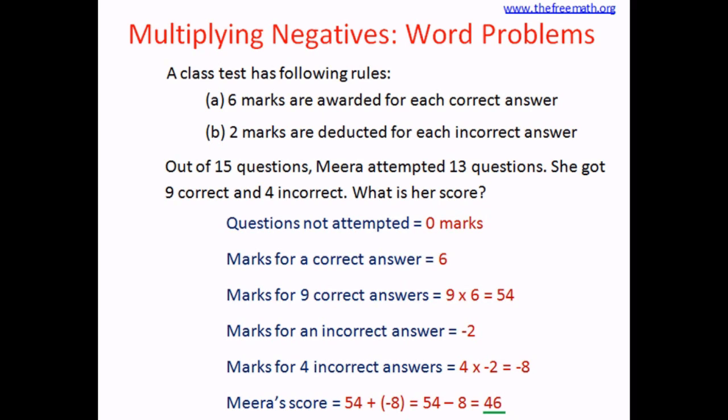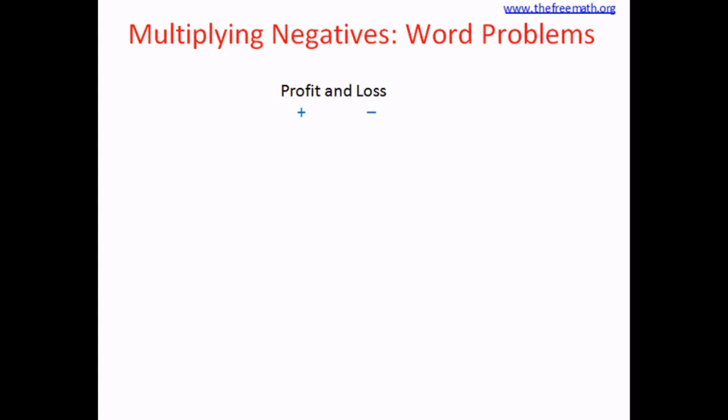Where else do we use negative numbers? In profit and loss. For example, a furniture shopkeeper gets 100 rupees of profit per table and incurs 20 rupees of loss per chair. Profit is positive and loss is negative, so profit per table is positive 100 and loss per chair is negative 20. You can solve such problems the same way as before — profit replaces marks for a right answer, and loss replaces marks for a wrong answer.